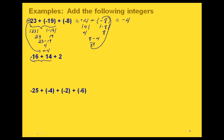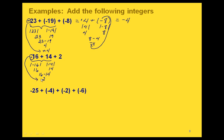Now let's do the same thing for this example. Let's start with negative 16 and positive 14. We have two different signs — a negative and a positive. The absolute value of negative 16 is 16, and the absolute value of 14 is 14. The 16 is the larger of those two, so we take 16 minus 14, which gives us 2. Then we take the sign that went with the 16. Looking back, 16 was negative, so that means we get negative 2.